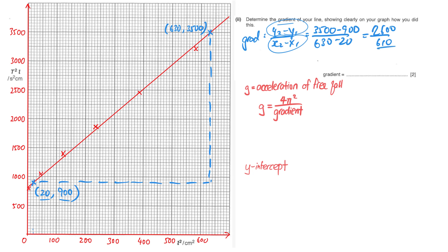You'll get 2600 over 610. The least significant figure here is three sig figs, so the final answer is left in three sig figs: 4.26. If you are unsure, in general two or three sig figs is fine. Now let's go to the units of the gradient. It is good practice to include the units, and especially if they ask for it, you definitely have to. The gradient is rise over run.